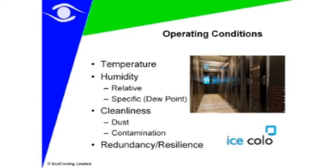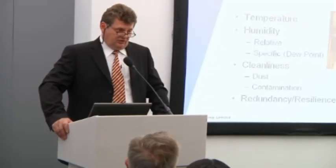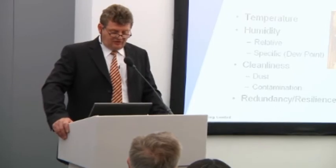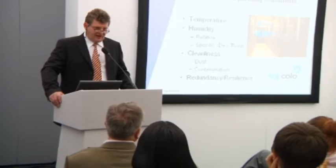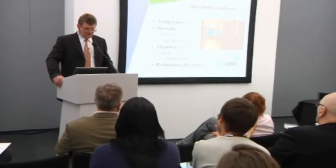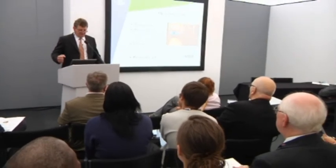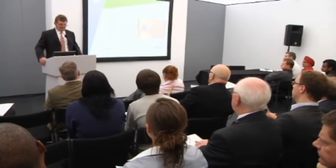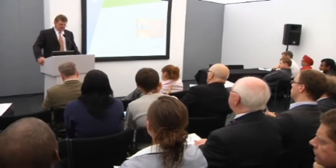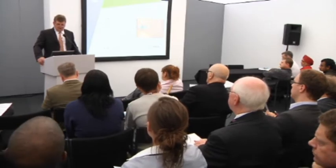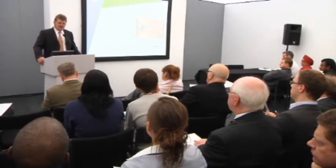Let's look at the operating conditions that are required in a data centre. Here we've got a typical example — this is the IceColor, which is a separate company owned by M247. Those familiar with data centres and server rooms will recognise the cold aisle containment. In that cold aisle containment, we're pushing air up through the raised floor through grills, and we're trying to achieve the right temperature, humidity, cleanliness and redundancy. However, many people in the sector don't currently understand what the modern standards are for those parameters, and that's what I'll explain over the next couple of minutes.